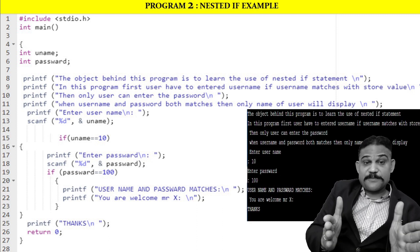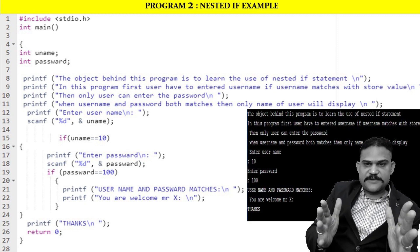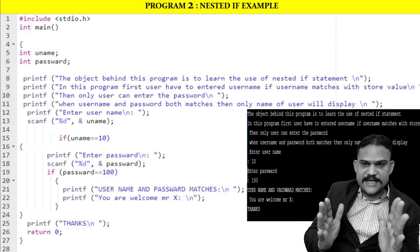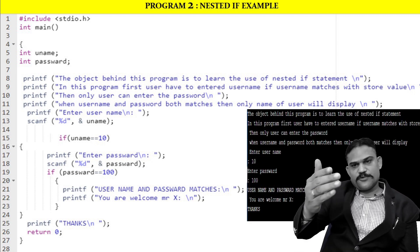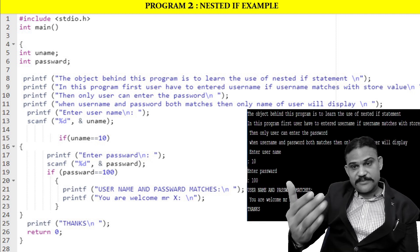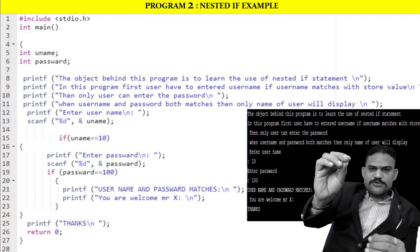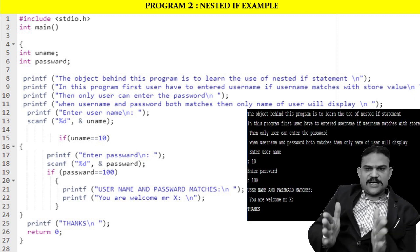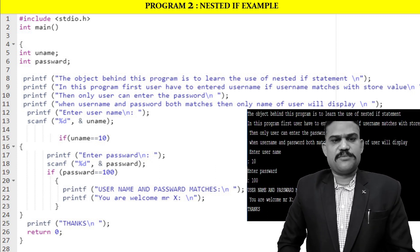Then the second condition is applied: if password equals 100. If the password is equal to 100, the screen displays 'username and password match', followed by 'you are welcome Mr. X'. The welcome message is only displayed when both username equals 10 AND password equals 100. If only the username matches but the password does not, the welcome message will not appear.